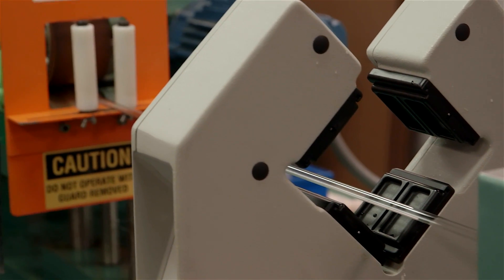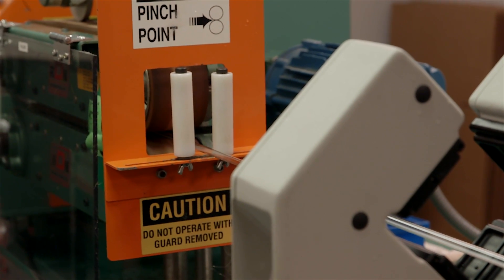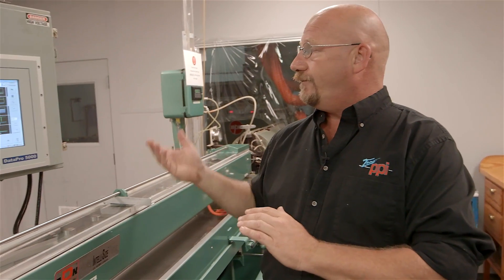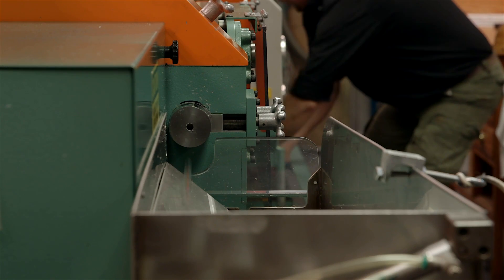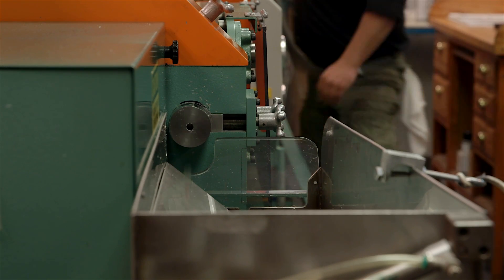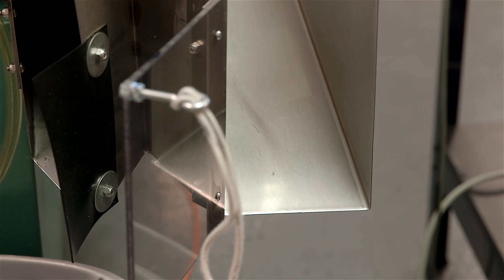We have actually been able to set up tight tolerances to ensure a quality product to our customer. If we should happen to fall out and reject, a rejection will come up, it will open a trap door. Now we're conveying that bad product over into a scrap bin.